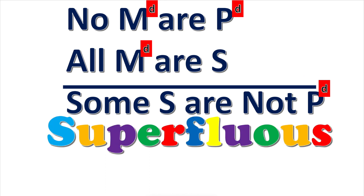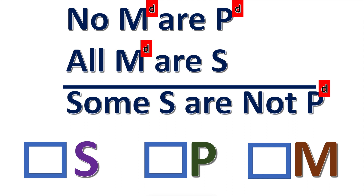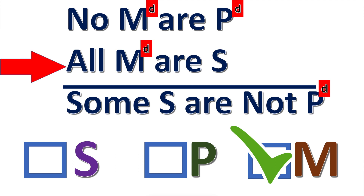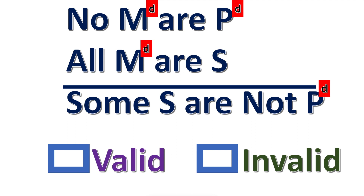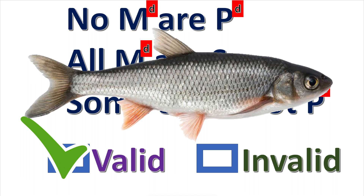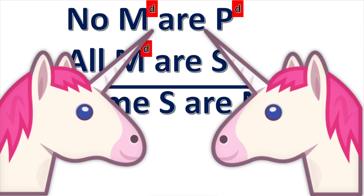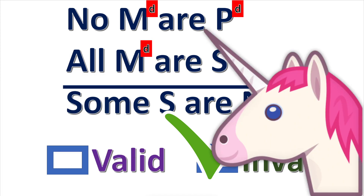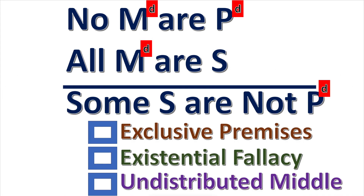Applying the superfluous distribution rule: M is distributed in the first premise, which satisfies rule one, but M is also distributed in the second premise — making M the critical term. If M stands for fish, the syllogism is valid from the Aristotelian standpoint since fish exist. If M stands for unicorns, the syllogism is invalid because unicorns do not exist — it commits the existential fallacy from the Aristotelian standpoint.